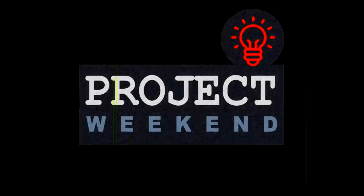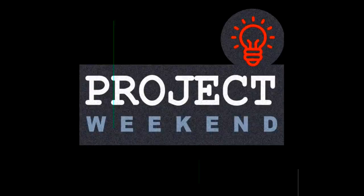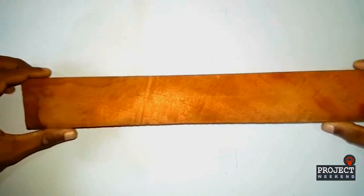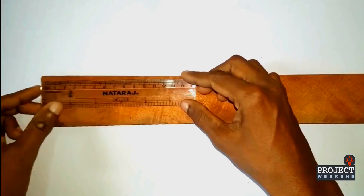Hello, welcome to Project Weekend YouTube channel. Today we are going to make a wooden compass for drawing circles on a whiteboard for teaching purposes. We need three pieces of wood 25 by 5 centimeters and at least 1.5 centimeters thick.